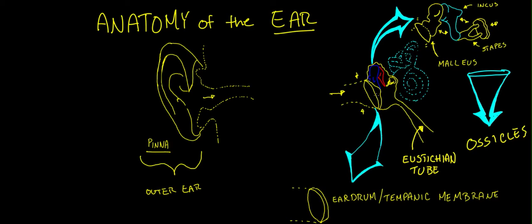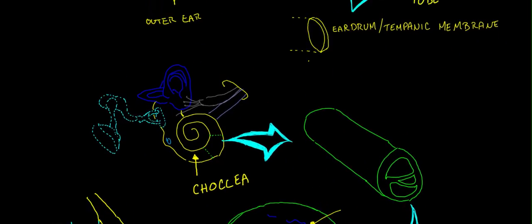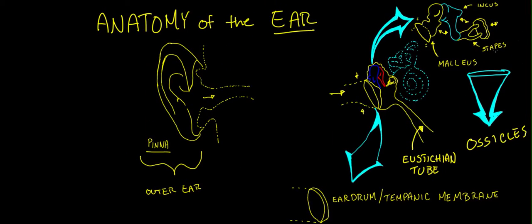And they're connected from the tympanic membrane over to the cochlea. All you need to remember is that all three of these little bones equal the ossicles.